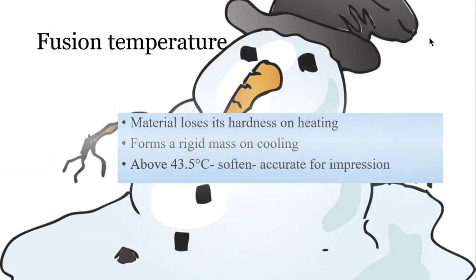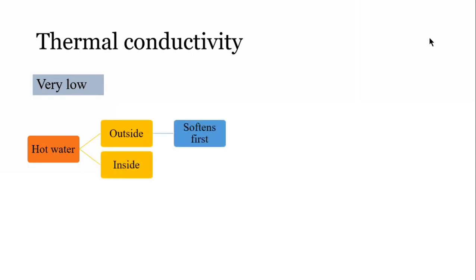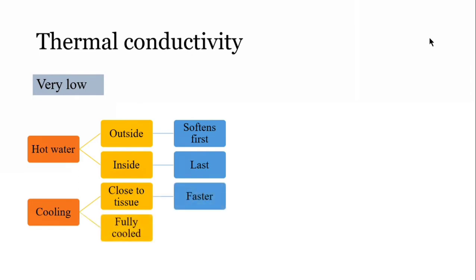What is thermal conductivity? It's the ability of a material to allow heat to pass through it. Impression compounds show very low thermal conductivity—they are very poor conductors of heat. The significance is that when this material is put in hot water, the outer surface softens first and the inner surface softens last. When cooled, the material facing the tissue cools faster. You should make sure the impression is fully cool before taking it out, or it will undergo distortion.